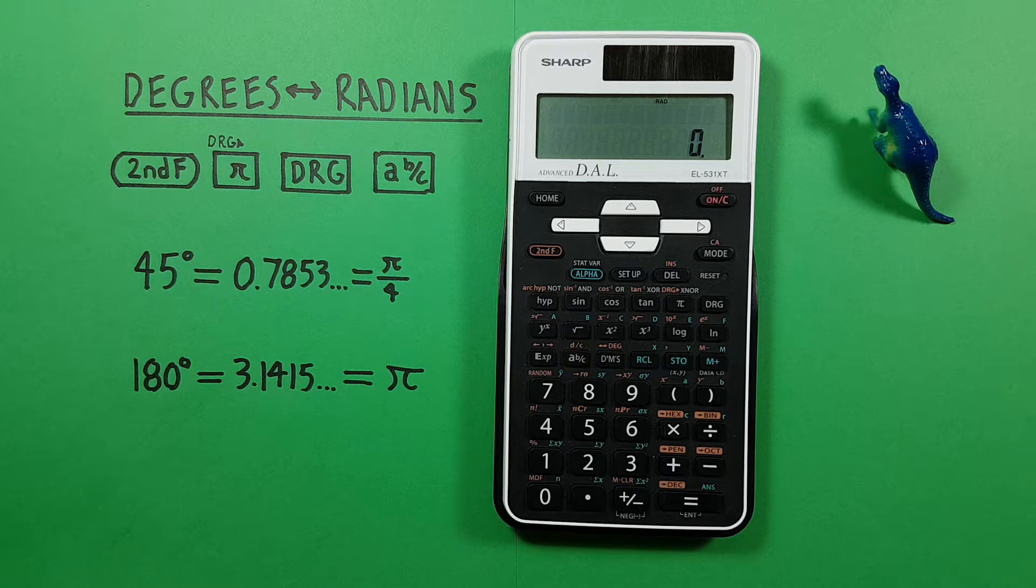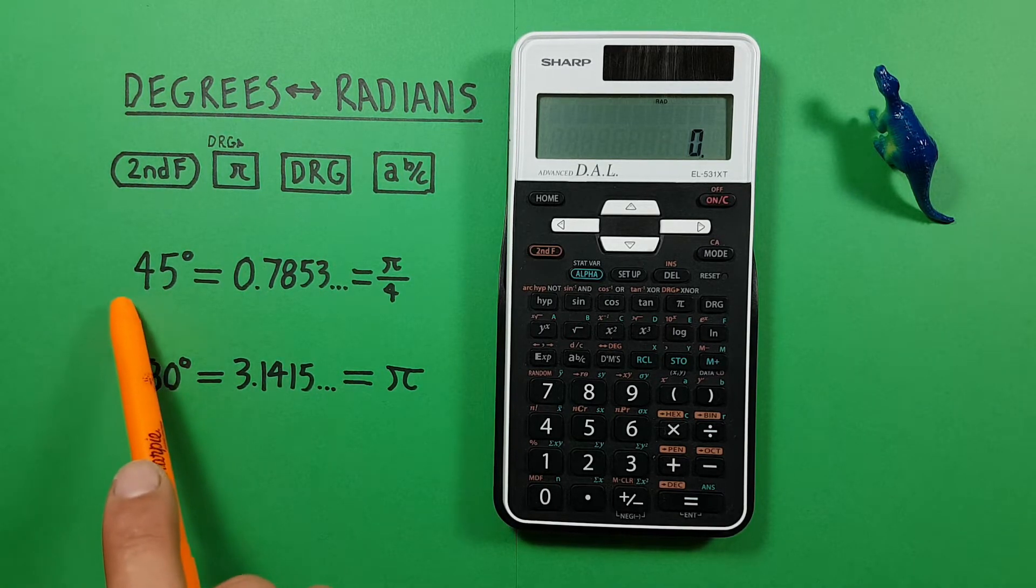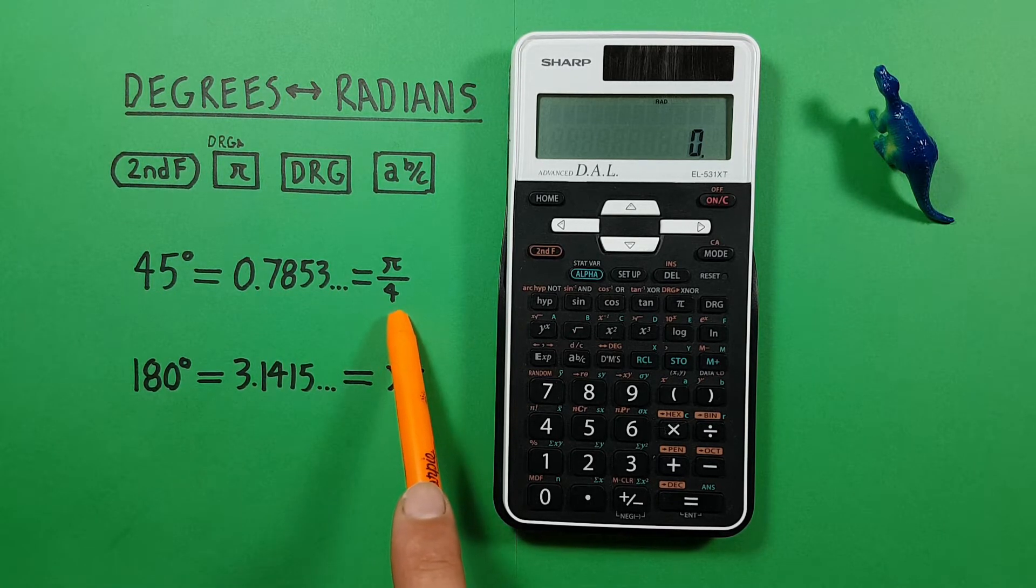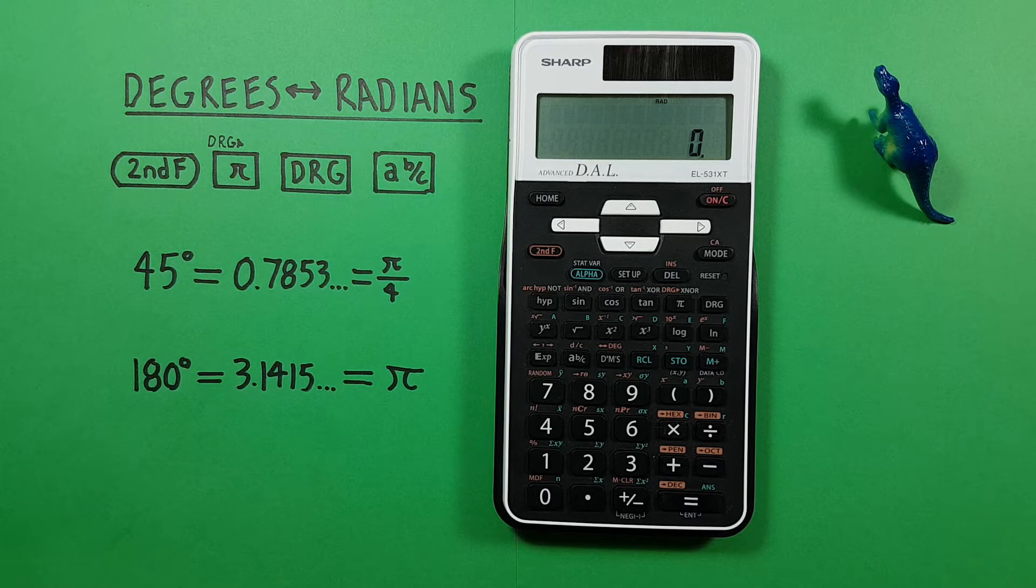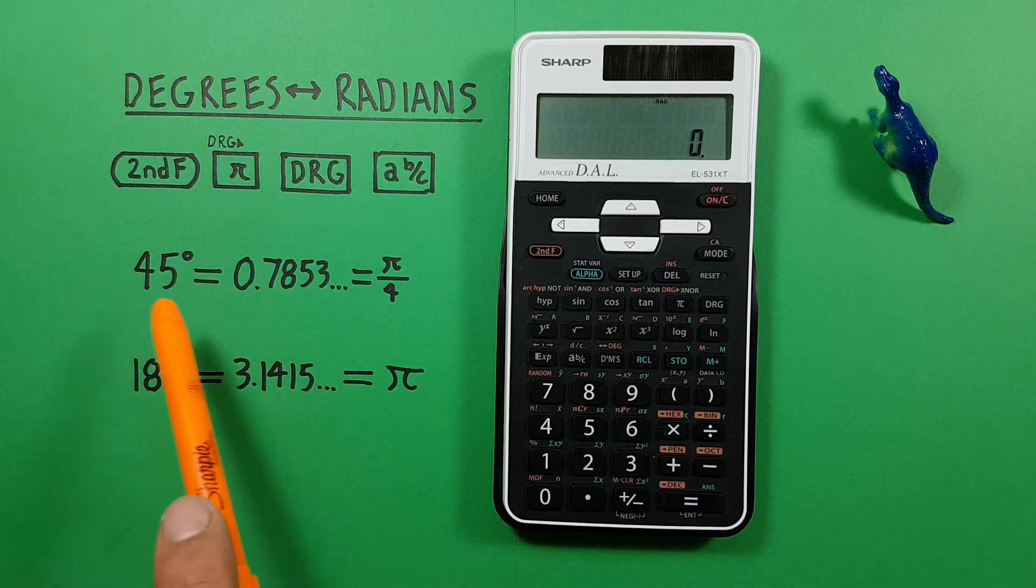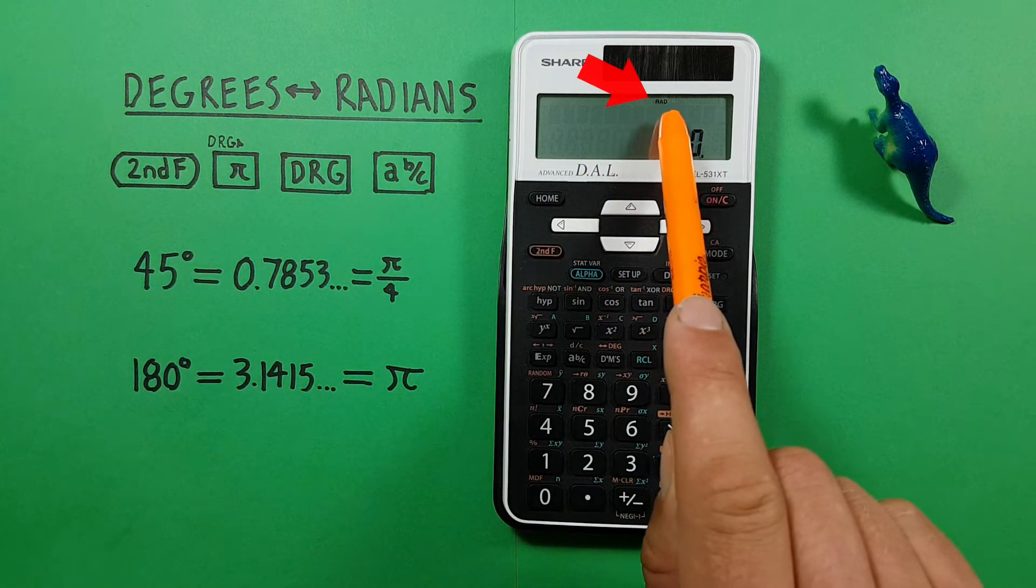This calculator lets us convert between degrees and radians in just a few button presses. For example, if we were given 45 degrees and wanted to convert that to radians, first what we want to do is make sure our calculator is set to the mode we are entering. So since we are going to be entering 45 degrees, we want to see DEG at the top of the screen here.